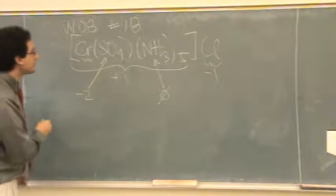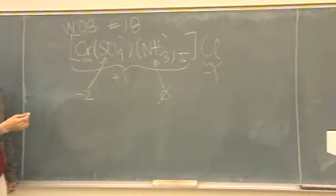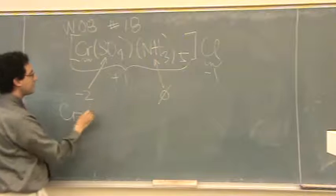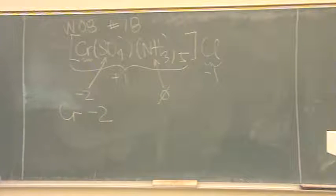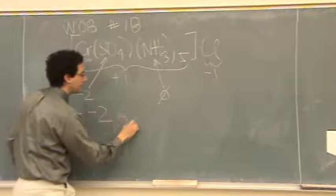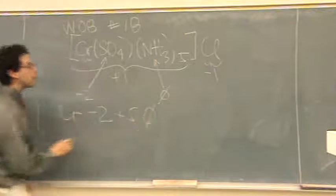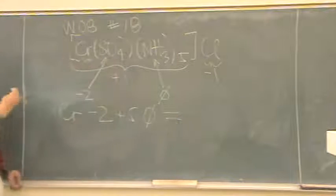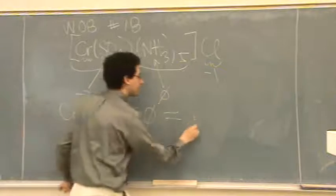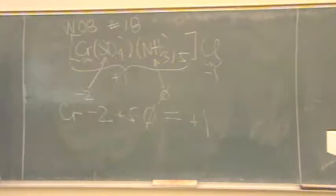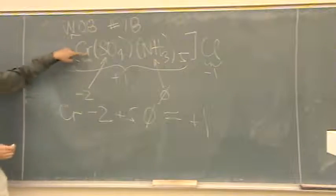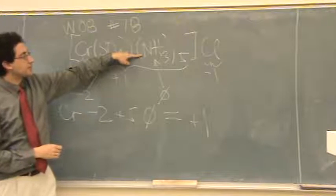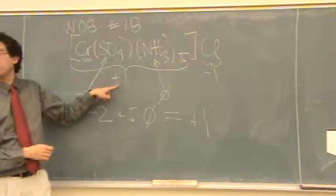Okay, so that means I have a lot less than what I started with. Chromium and then minus 2 for the sulfate plus 5 times 0 for ammonia equals the overall charge inside the brackets of plus 1. Chromium minus 2 for sulfate, there's only one of them, plus 5 zeros equals the overall charge of plus 1 for the brackets.